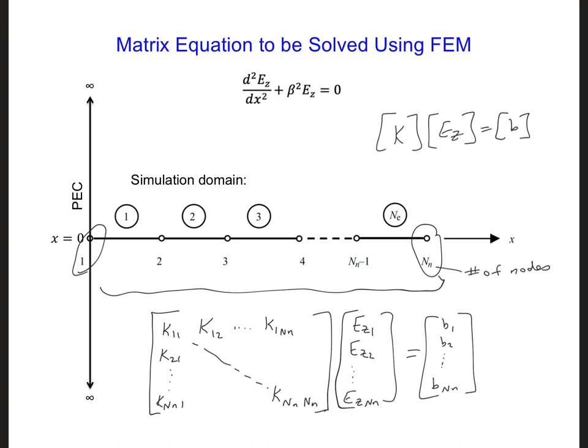Along this one-dimensional grid we can label the unknowns that we're solving for in this system of equations. Here we would solve for ez1, so the subscript gives a node number, here we would solve for the value ez2 and so forth to eznn.